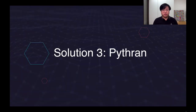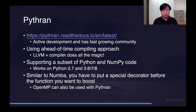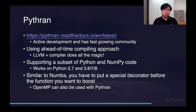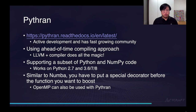Now let's move on to the last solution: Pythran. Pythran is a relatively new open source project written by a French developer, and it is under very active development with a fast-growing community. Unlike Numba, which uses just-in-time technology, Pythran uses an ahead-of-time compiling approach — it translates a part of your Python and NumPy code into C++, then utilizes a modern compiler to compile and optimize your code into efficient low-level machine code. It supports a subset of Python and NumPy functions and works on Python 2.7 and Python 3.6 to 3.8. Just like Numba, all you have to do is put a special decorator before the function you want to boost.